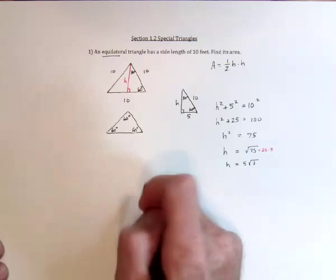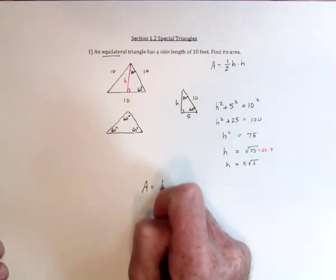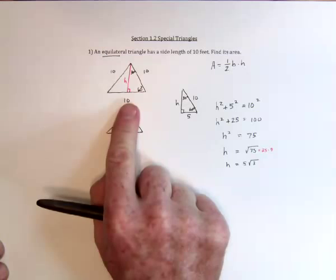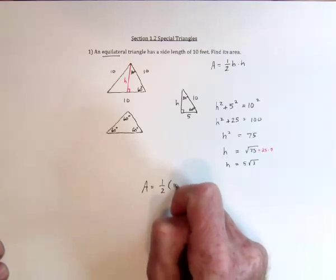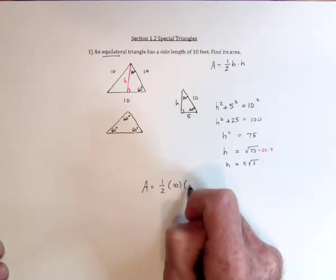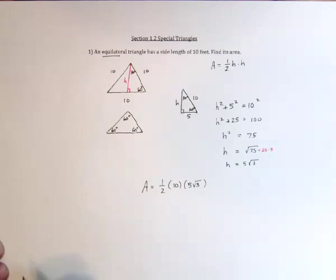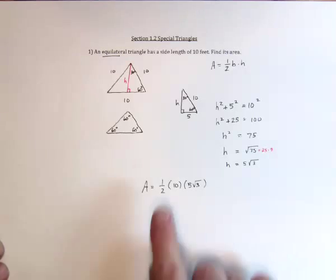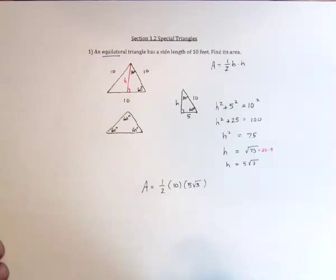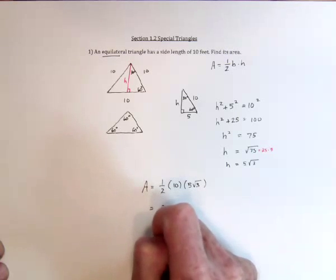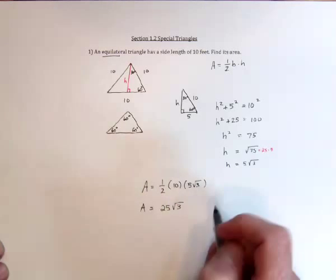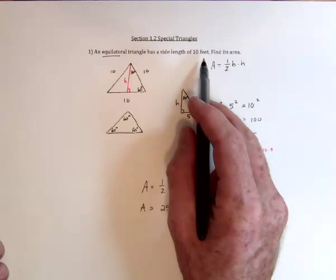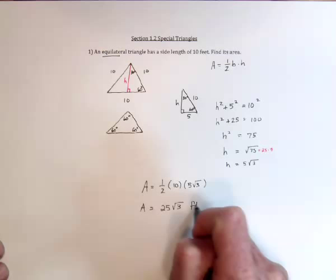And now I have all the pieces that we need. So area is equal to 1 half. Go back to the original triangle and the base is 10. And then the height is 5 square root of 3. So in total, this is going to be 5 times 5 is 25. 25 radical 3, and then the units are going to be feet times feet or square feet.